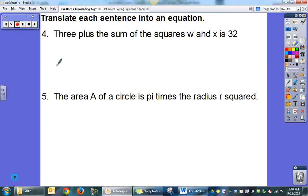3 plus the sum of the squares w and x is 32. Notice it says the sum of the squares w and x, so each of those are squares. It doesn't say the square of the sum. So if it said the square of the sum, then we would be looking at that versus this.